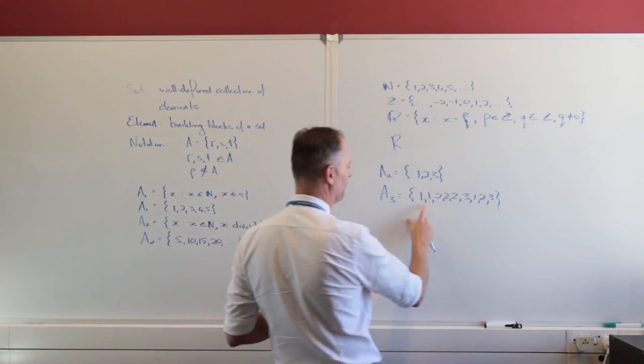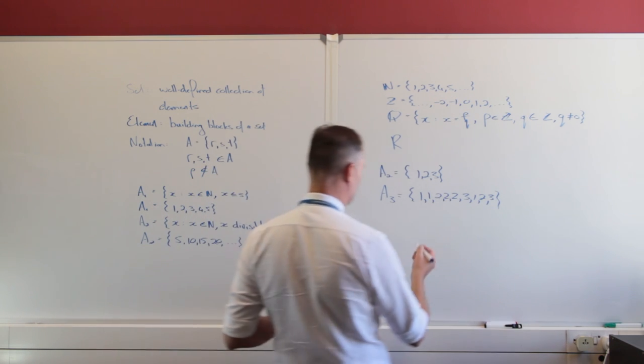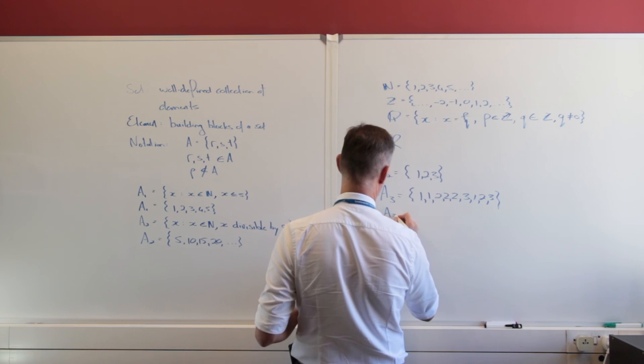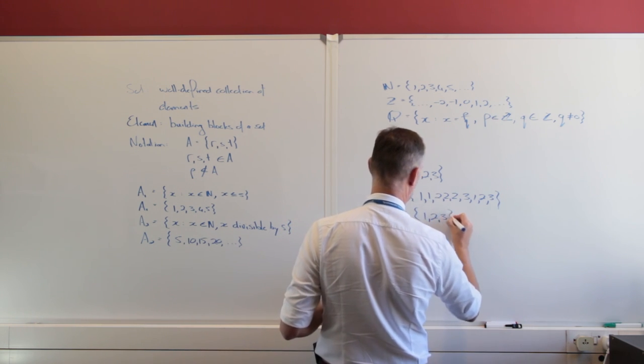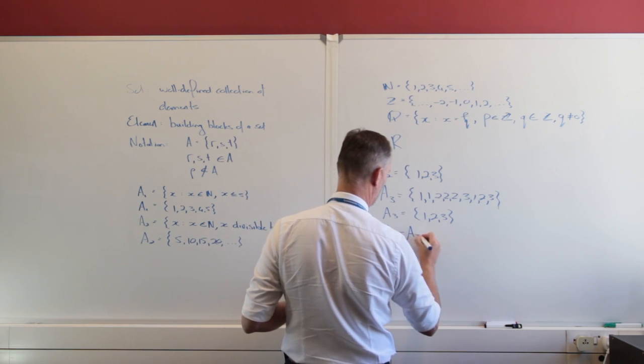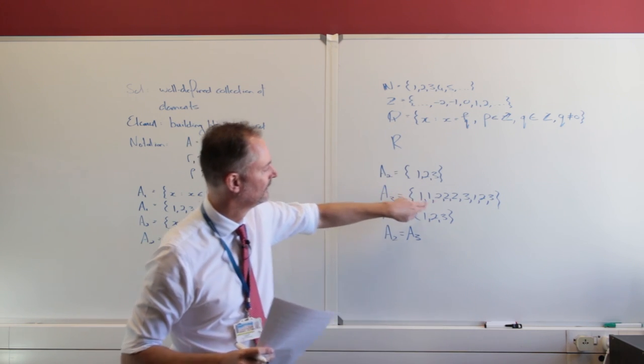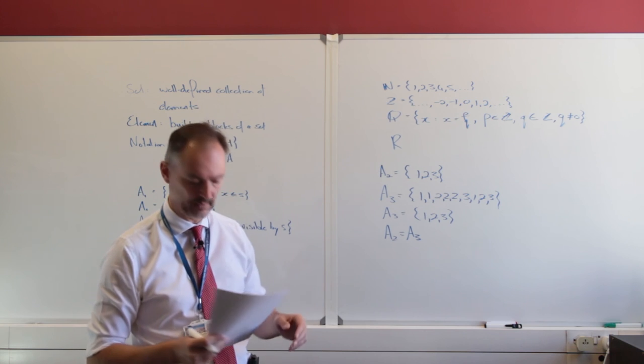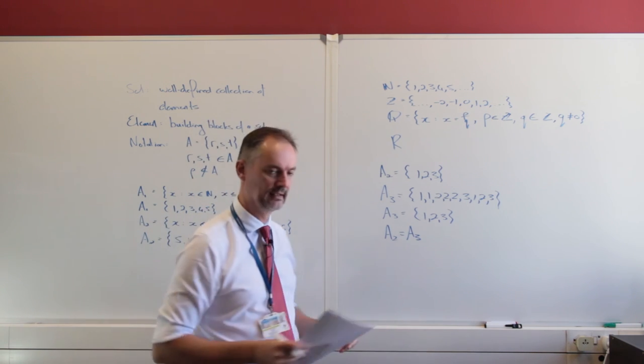When we have repetitive elements like that, we only view them once. So this A3 is actually going to be the same 1, 2, 3, and elements are the same - they are equal to each other if they have the same building blocks or the same elements. So these two sets, although they appear different here, remember, by definition we really are going to view them as exactly the same.